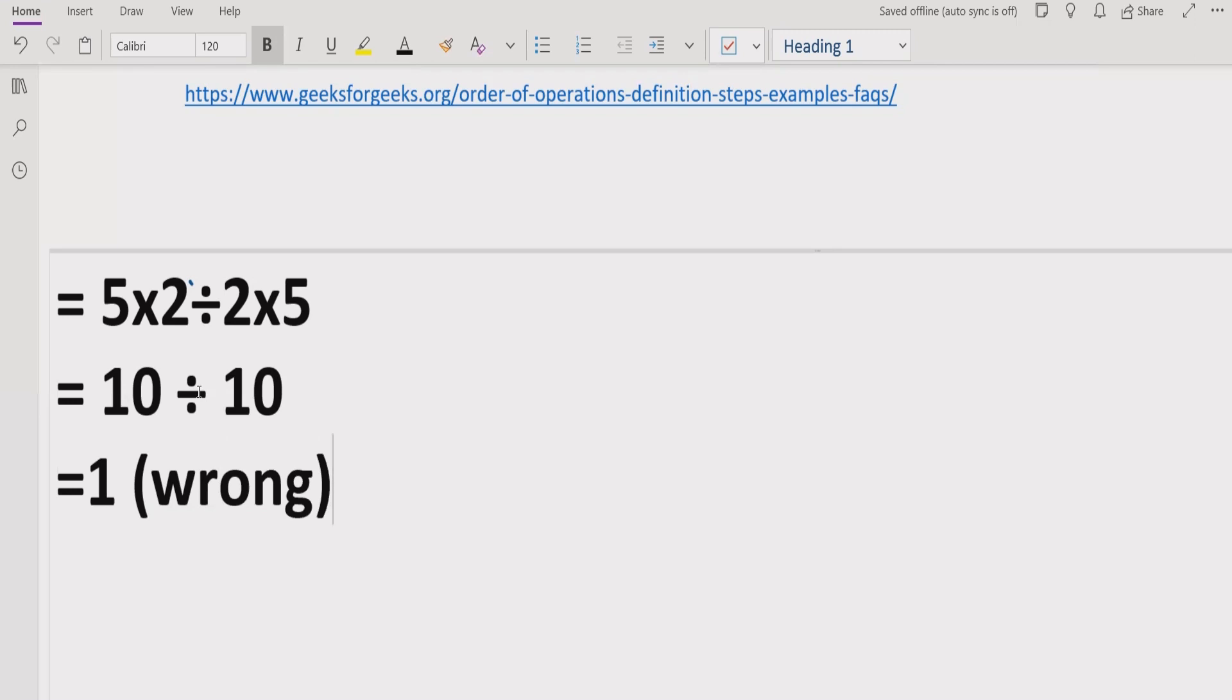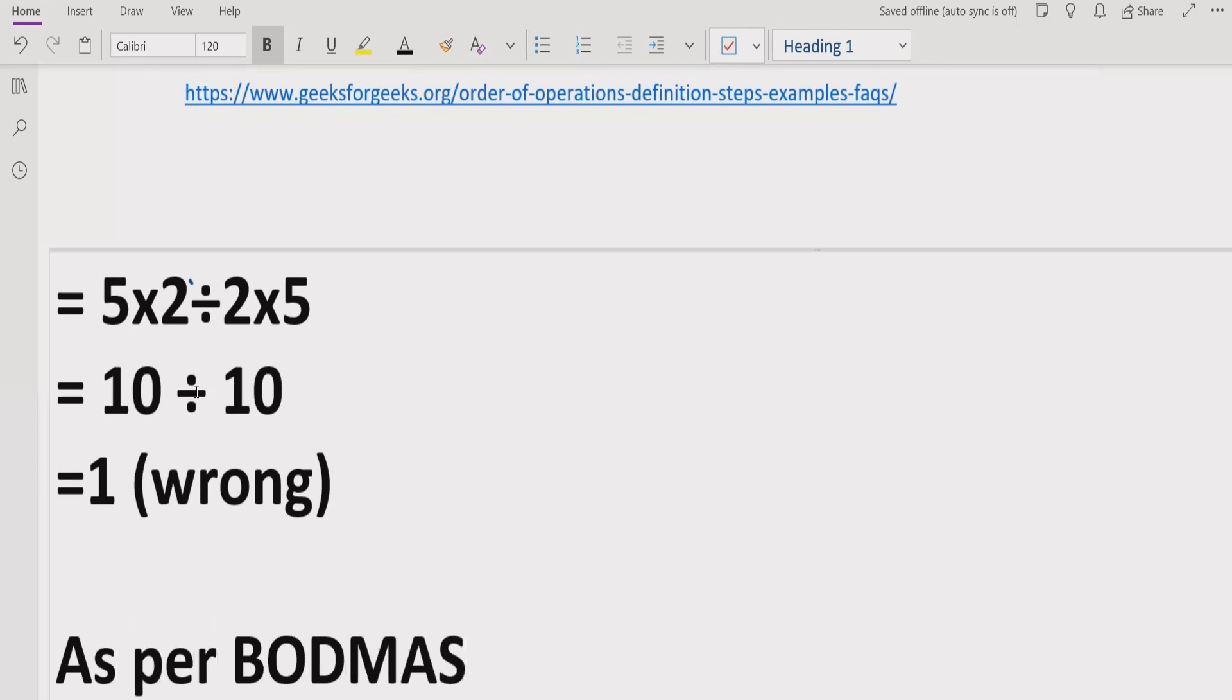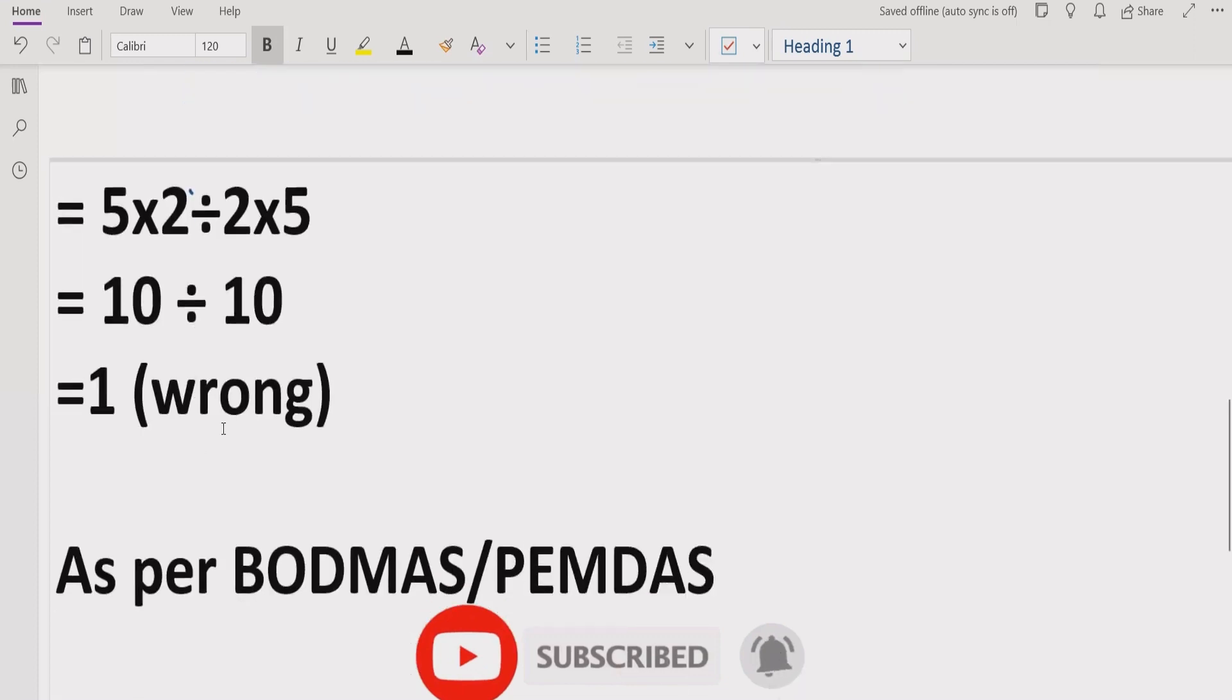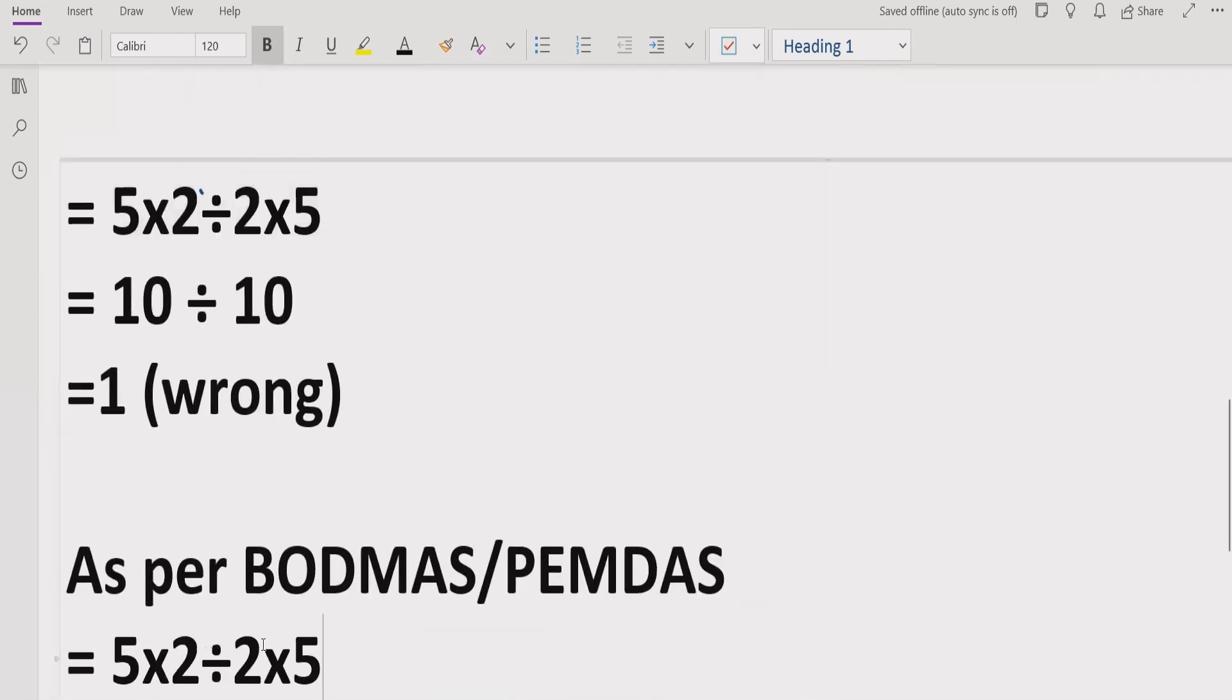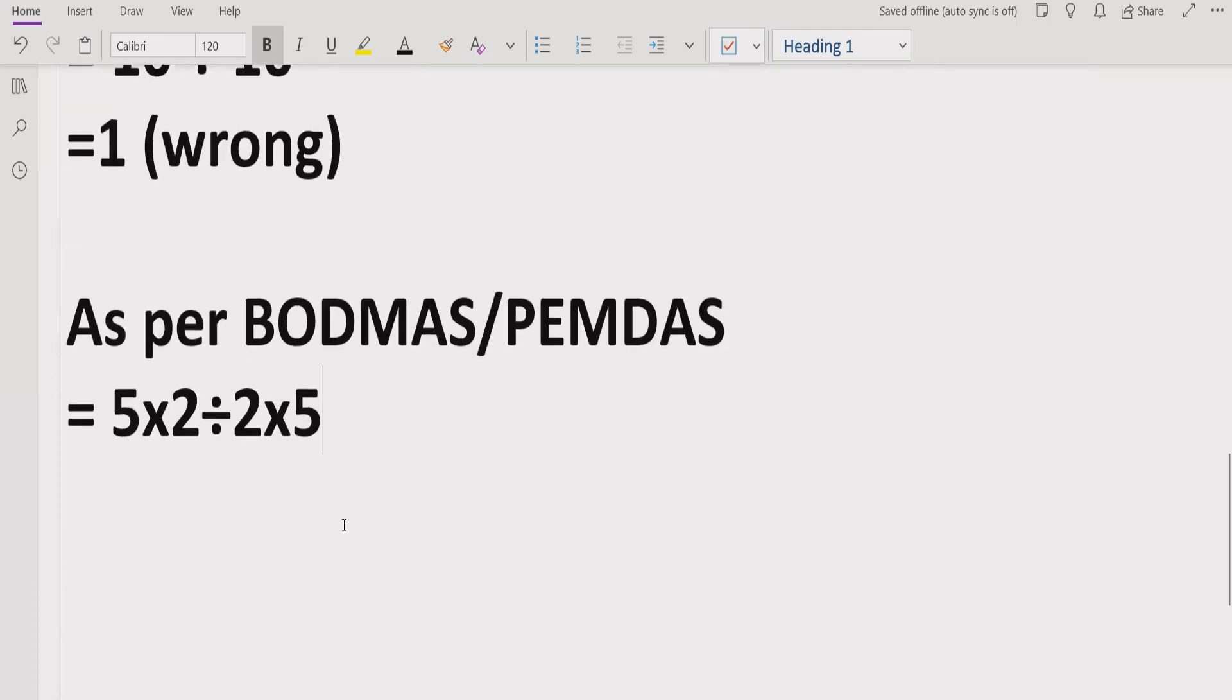Now you have to follow the PEMDAS and BODMAS rule to solve this expression. As per BODMAS or PEMDAS, we have 5×2÷2×5. So we go first left to right.